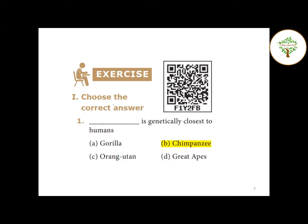First question: Which animal is genetically closest to humans? The answer is Chimpanzee - Option B. More specifically, it is the Pygmy Chimpanzee, as mentioned in the lesson.